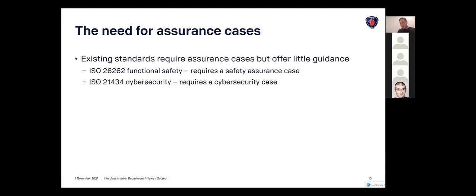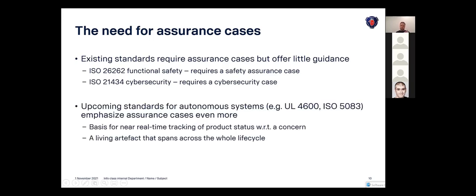And currently, assurance cases are required by some standards. For example, this one for functional safety or this one for cyber security, but they are becoming even more emphasized in upcoming standards like your for 600 or the upcoming ISO 5083. And the idea is basically to say, okay, what you need to do is to produce an assurance case and set that mindset in the beginning, and basically use the assurance case as you gradually build it up as a basis for tracking of your status of your product with respect to concerns such as safety or cyber security. And the idea is that this will be truly a living artifact that spans across the whole life cycle and it's managed for many years. A truck can be used for 20 years and you need to maintain an assurance case for that truck.